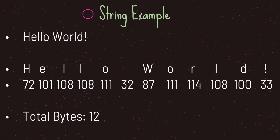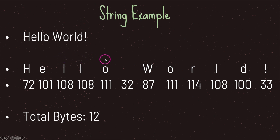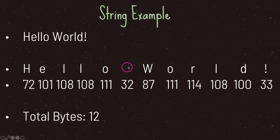Let's take a look at a string example. Here we have the string "Hello World!". Breaking it down into Unicode decimal values: capital H represents seventy-two, and each letter — whether uppercase or lowercase — has a different decimal value attached to it. The exclamation point is represented by decimal value thirty-three, and even the space has a decimal value representation of thirty-two, with its own binary equivalent.